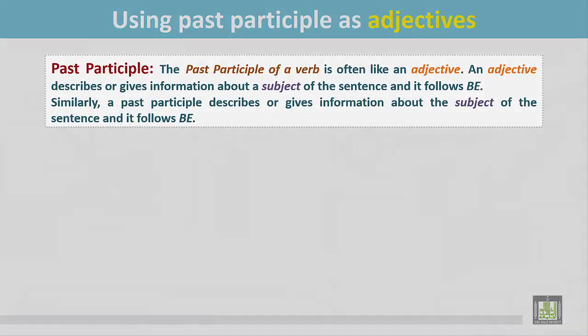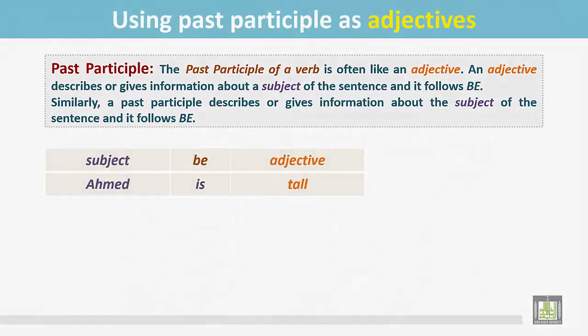The past participle of a verb is often like an adjective. An adjective describes or gives information about the subject of the sentence and it follows the be verb. Similarly, a past participle describes or gives information about the subject of the sentence and it also follows the be verb.